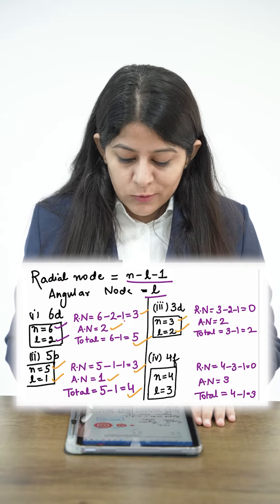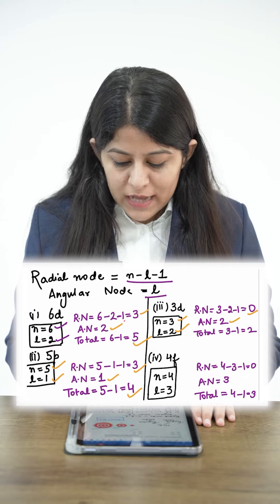3d: N is 3, L is 2. So radial nodes are 0, angular nodes 2, and total nodes 2.